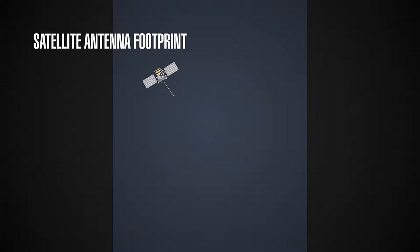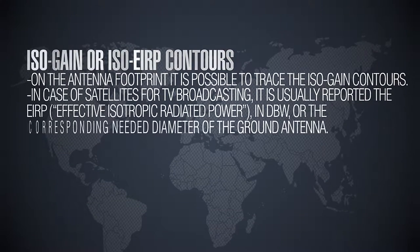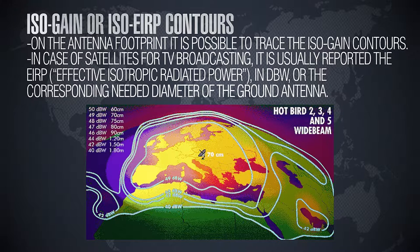Let's speak about the satellite antenna footprint. In the slide you can see a satellite radiating through its antenna, with the main beam illuminating one part of the earth. The part of the earth illuminated by the main beam — defined by a minimum gain threshold — is called the satellite antenna footprint. An example shown is the Hot Bird family of geostationary satellites, which are used by many people to receive TV programs via satellite antennas.